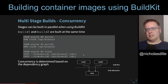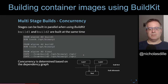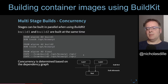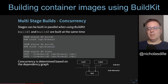What BuildKit does is it analyzes the Dockerfile and creates a dependency graph based on the COPY commands. You'll realize that the final stage depends on build1 and build2, but there's no dependency between build1 and build2. So BuildKit will determine that the stages build1 and build2 can be run in parallel, while the final stage has to wait for build1 and build2 to finish before it can complete.